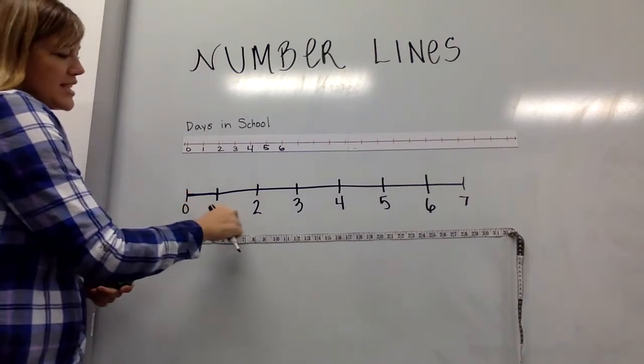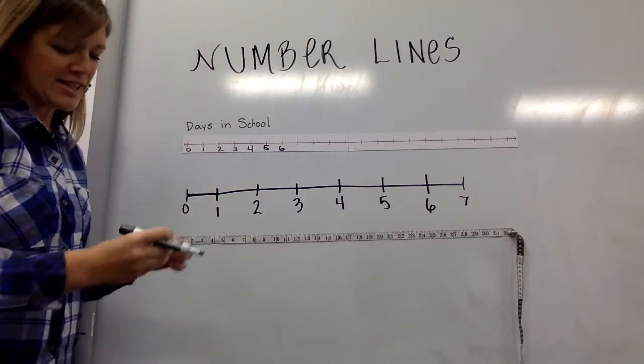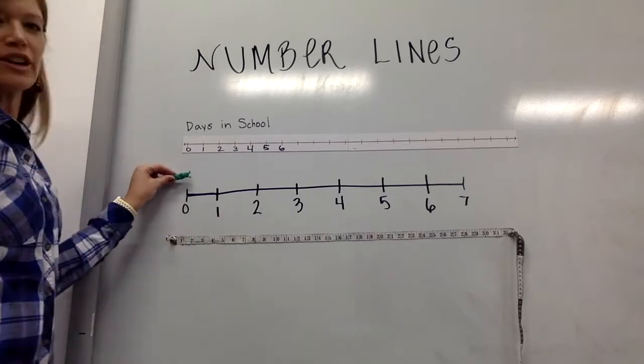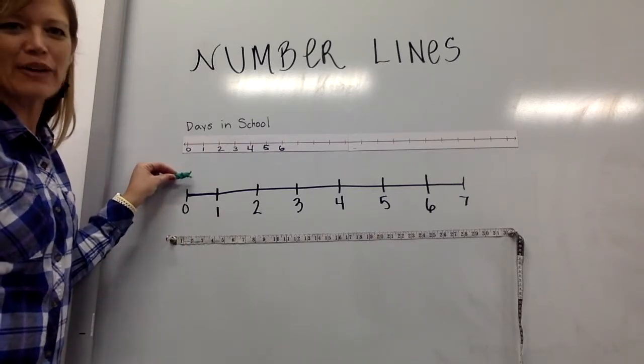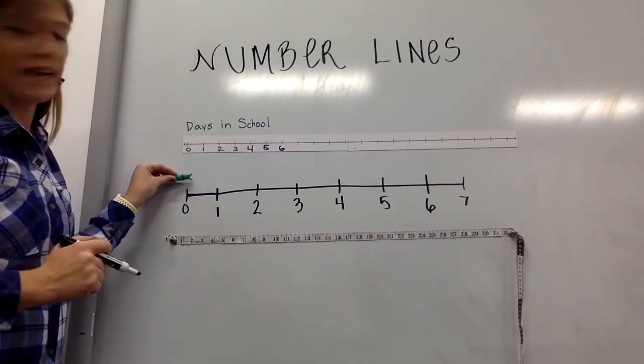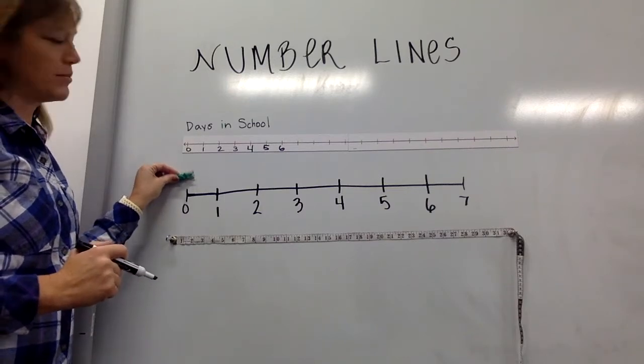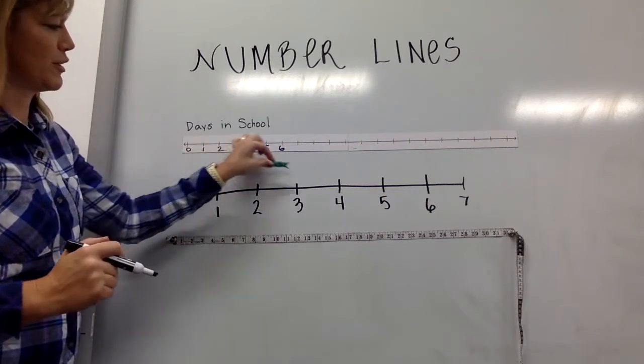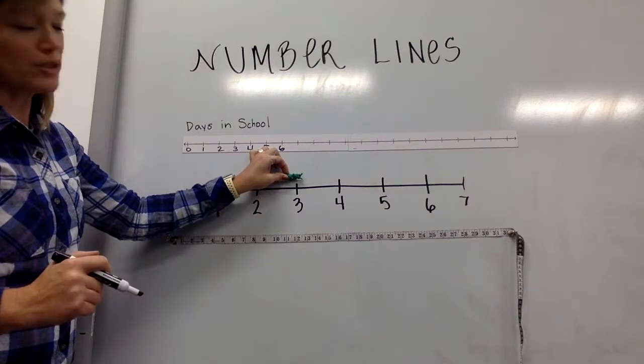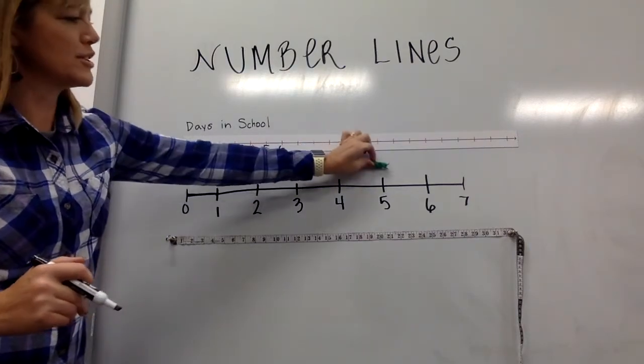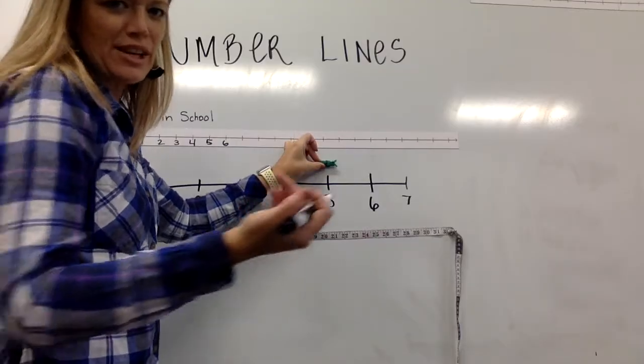We then begin to have set number lines that are already built for us, and we have creatures such as our grasshoppers and our frogs that jump along this number line. The grasshopper took three jumps—one, two, three—and then he took two more—one, two—and I can show that as an equation.